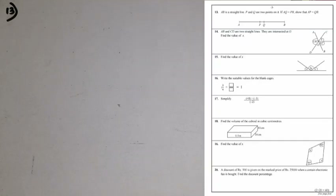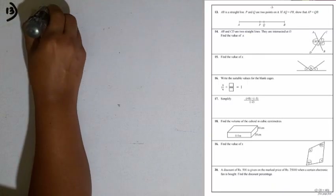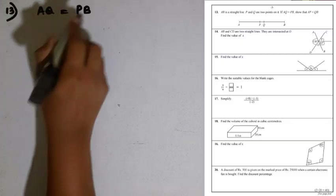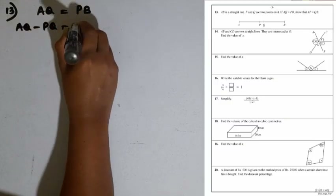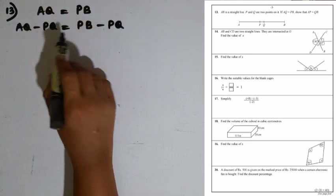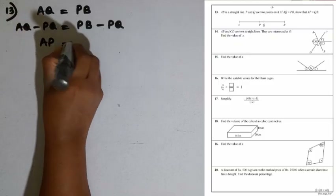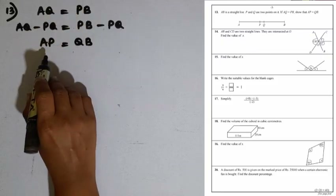Question number 13: AB is a straight line and P and Q are two points on it. If AQ equals PB, show that AB equals QB. We are given AQ equals PB, and we subtract PQ from both sides using axioms: AQ minus PQ equals PB minus PQ, which gives AP equals QB. This is the result we were required to prove.